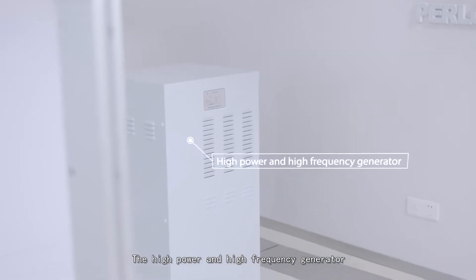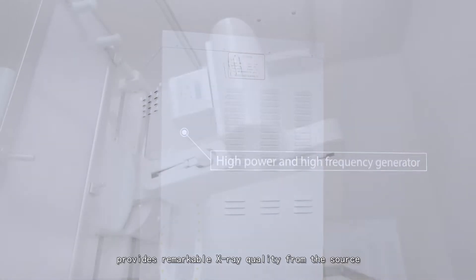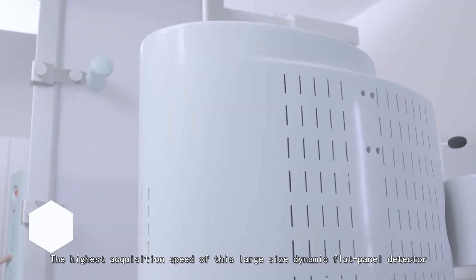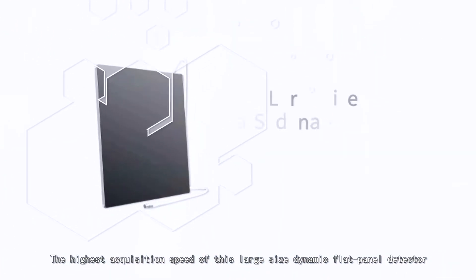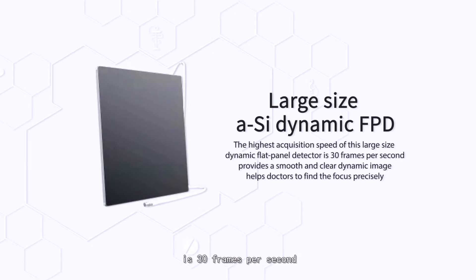The high-power, high-frequency generator provides remarkable X-ray quality from the source. Large heat capacity of the X-ray tube promises longer workflow. The large-size dynamic flat panel detector achieves 30 frames per second, providing smooth and clear dynamic images that help doctors locate the focus precisely.